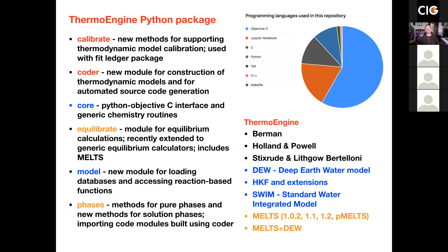What's currently in the Enki package? The Enki Python package, which is freely available on GitLab and open source, has a number of modules. It has a module called Calibrate, built to facilitate the calibration of thermodynamic models and other property measurements. It has a module called Coder, which is built to actually construct fast code from scratch and use it as a modeling tool — either integrated into existing thermodynamic databases or into existing fluid dynamical simulations.